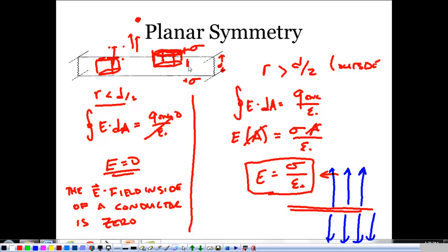That's what we get from planar symmetry. This is our easiest case, but it's a little harder to see that so-called Gaussian pillbox.